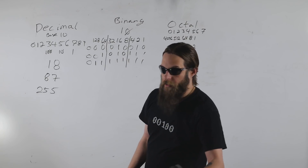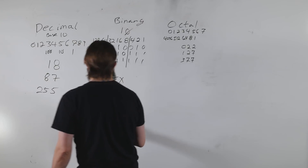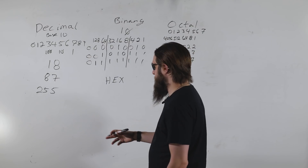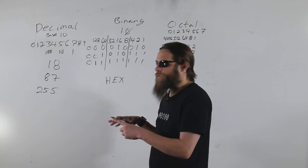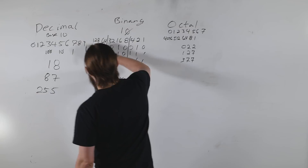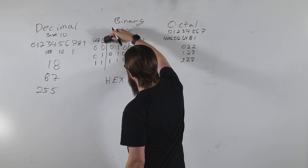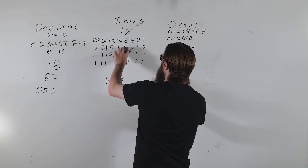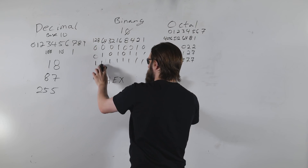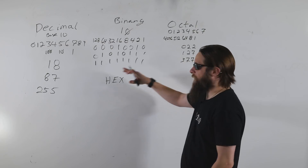Now the one you've all been waiting for: hex, or hexadecimal. Hexadecimal is base 16. The translation from binary is very similar to octal, except instead of grouping three bits we group four. Octal required padding a ninth bit, which is part of why it fell out of favor — it wasn't as clean for computers.